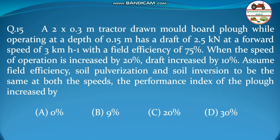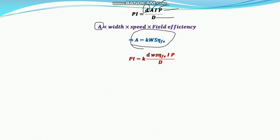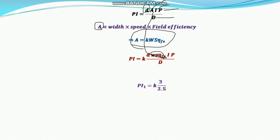Performance Index (PI) is used to compare implement performance and is defined as PI = (d × EFC × I × P) / D, where d is plowing depth, EFC is effective field capacity (width × speed × field efficiency), I is inversion, P is pulverization, and D is draft. Since width, depth, field efficiency, inversion, and pulverization are all constant, PI is proportional to speed divided by draft.